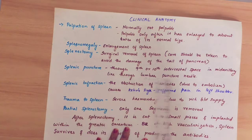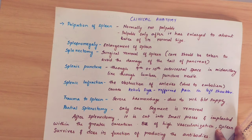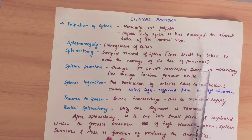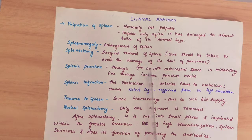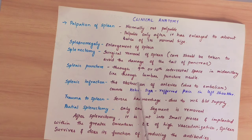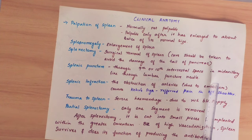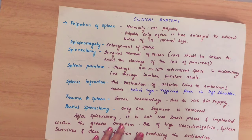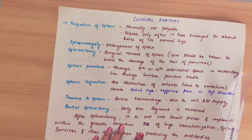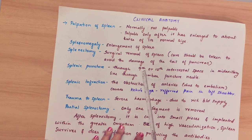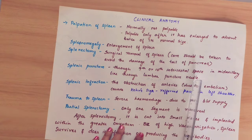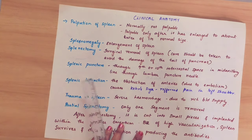Next is splenic puncture. If you need a biopsy of the spleen, it is performed through the 9th and 10th intercostal space in the mid-axillary line. A lumbar puncture needle is inserted at the 9th and 10th intercostal space along the mid-axillary line to perform the splenic puncture.